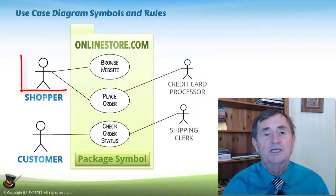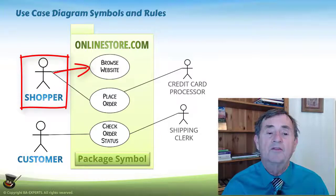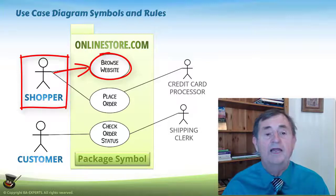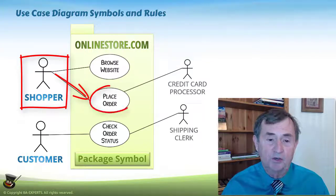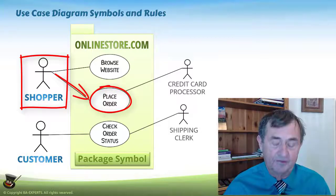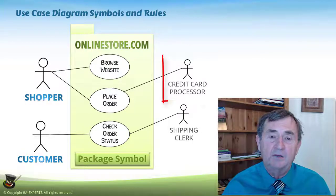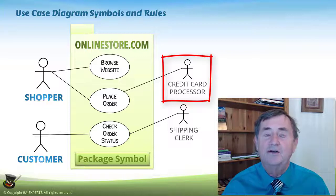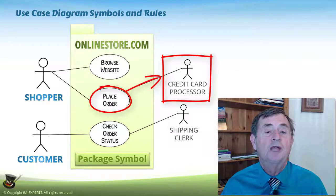The next symbol is the actor. In this example, the actor is a shopper who interacts with the Browse Website use case, so there is a connecting line between the actor and that use case. We also see that the shopper can place an order, meaning they can interact with the Place Order use case. The credit card processor is typically going to be an external entity or external API that Place Order uses to get the customer's credit card processed.